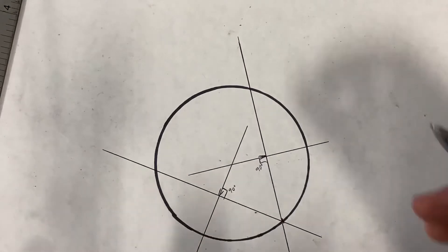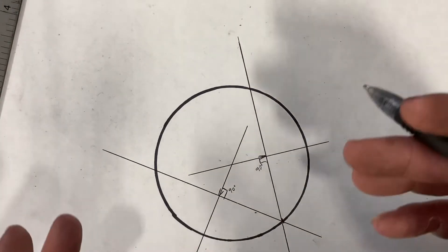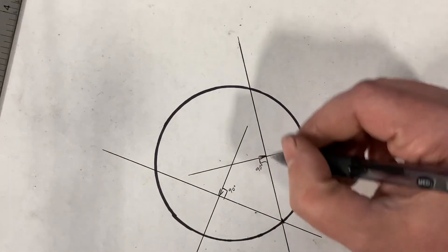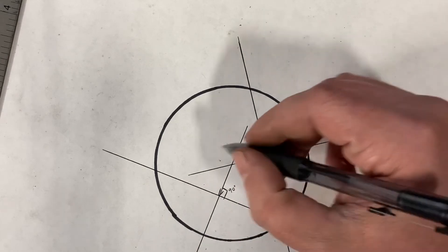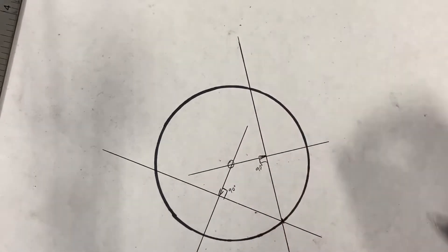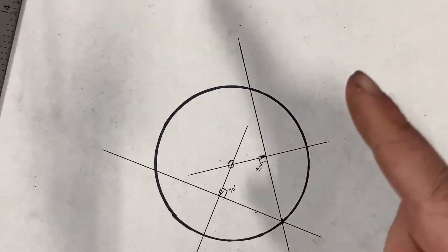Now if you did your math right, which there's not much math involved, but if you did everything right and these right angles are square, this should be your dead center. Now how do you check? I'll show you.